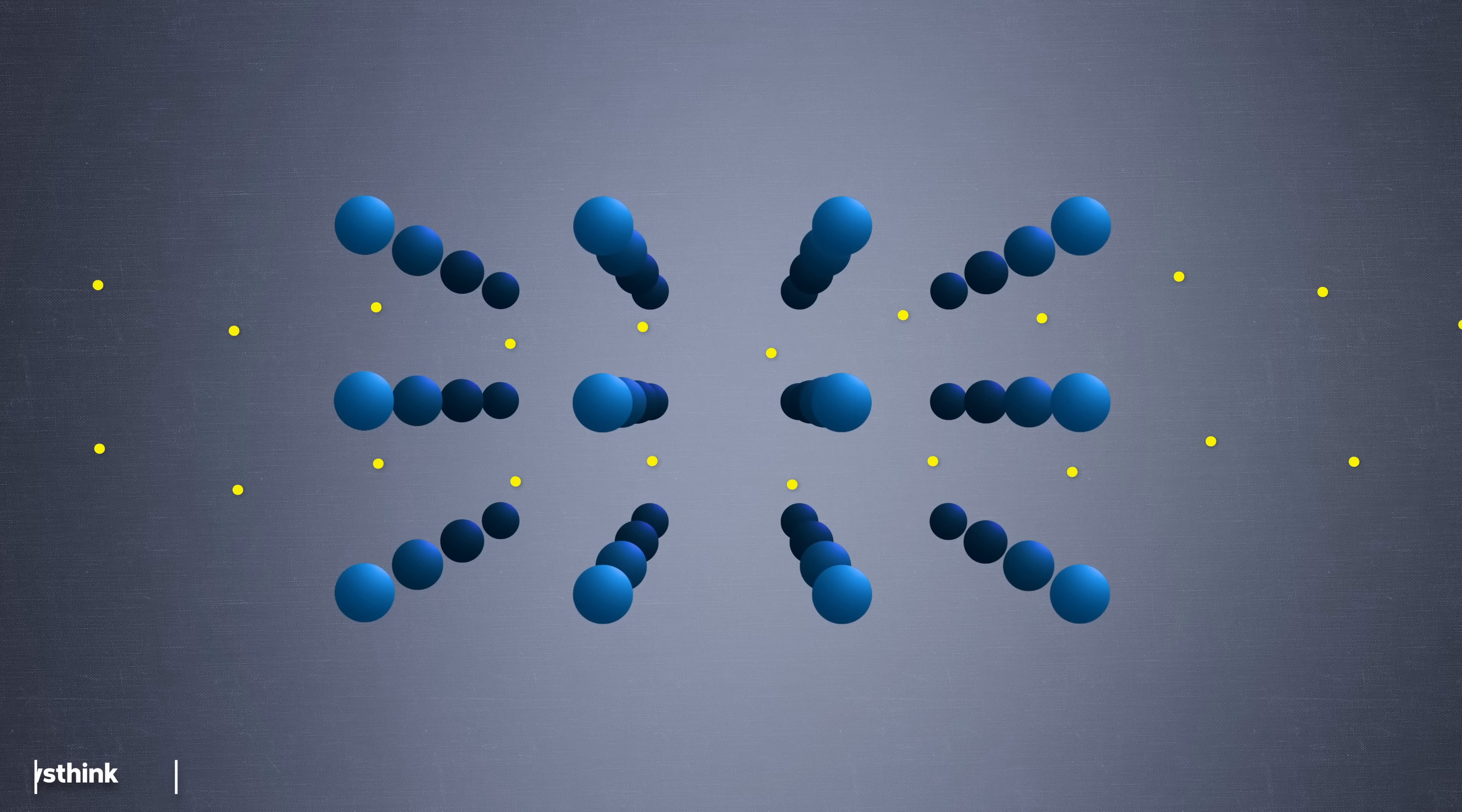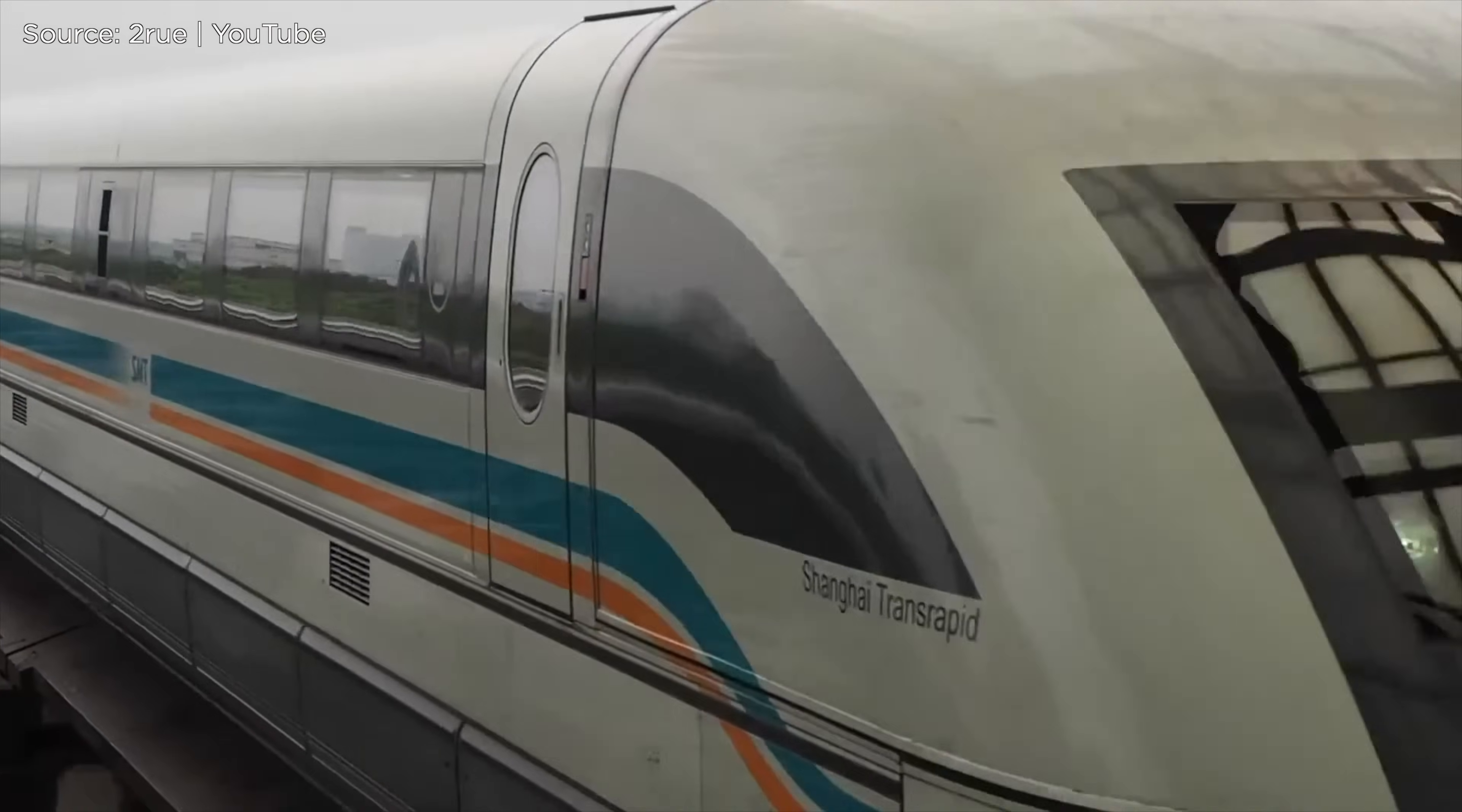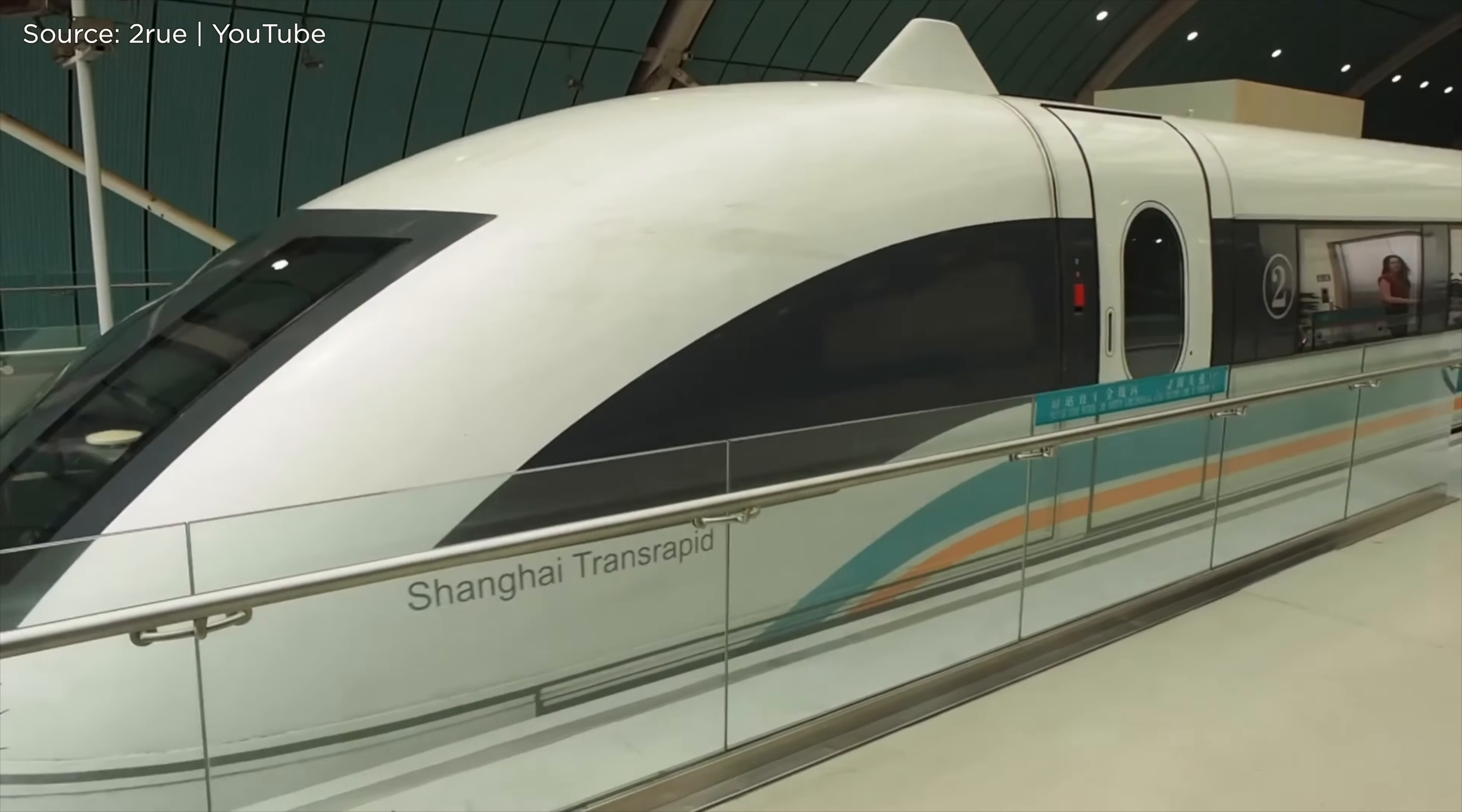This perfect current flow creates a very strong magnetic field around the superconductor. This magnetic field can interact with external magnets, such as those in a magnetic levitating train, creating a powerful repulsive force that causes the train to levitate above the tracks.